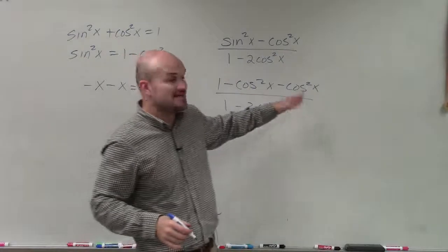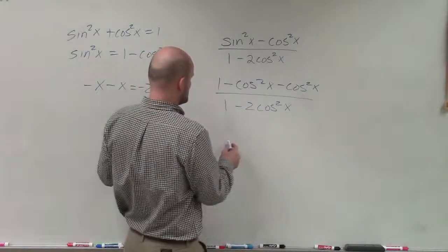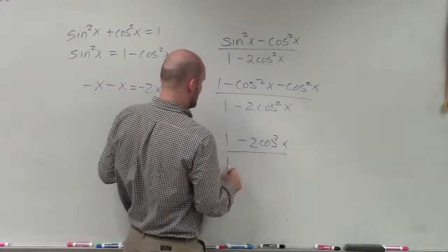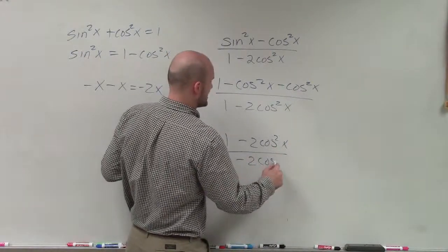So I have negative cosine squared of x minus cosine squared of x. So that's going to equal 1 minus 2 cosine squared of x divided by 1 minus 2 cosine squared of x.